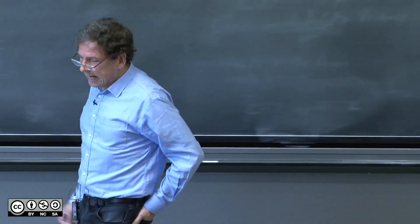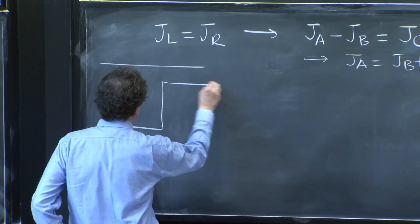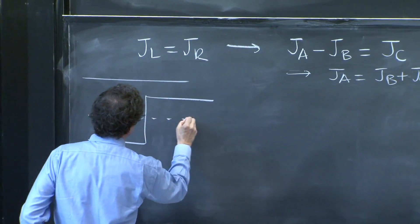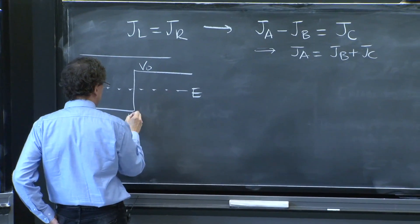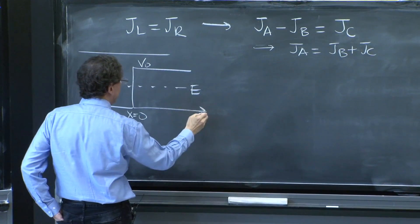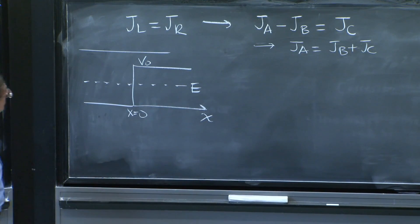Let's do E less than V0. So we're back here. And now, the energy E, here is V0. This is x equals 0, x-axis, and that's the situation.